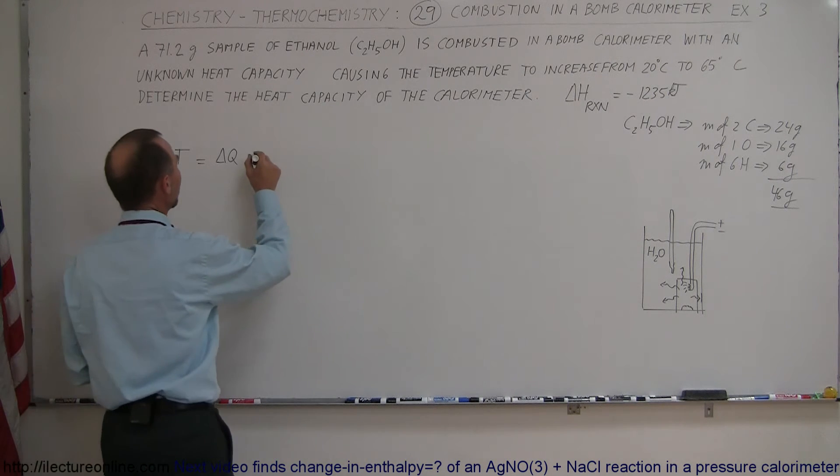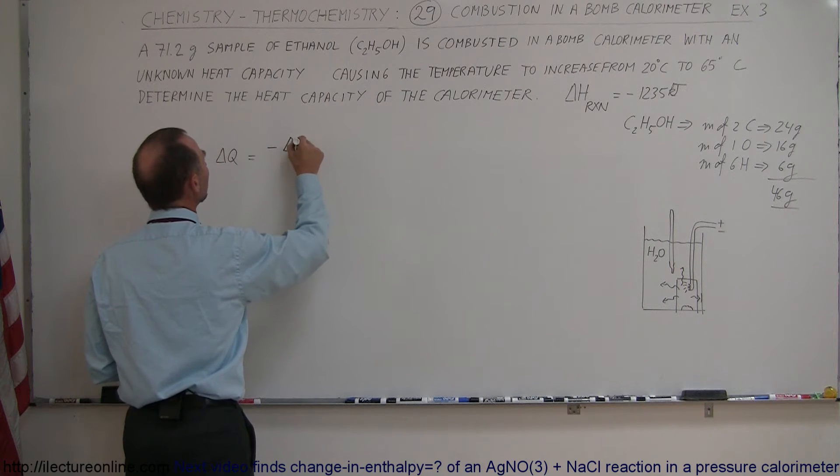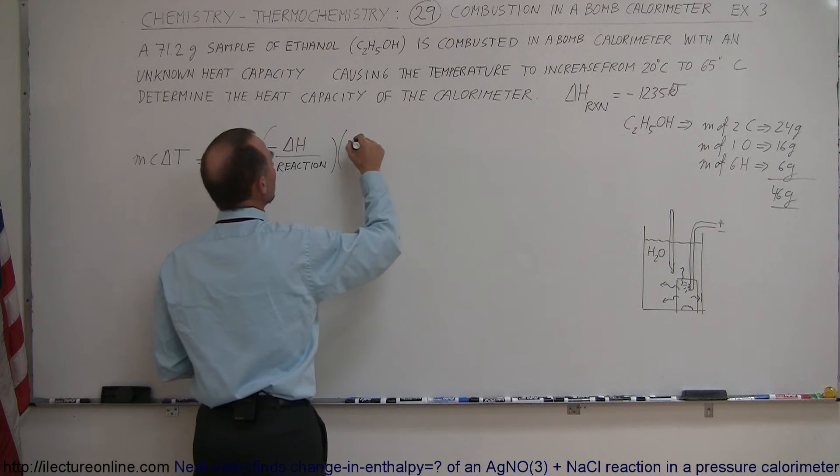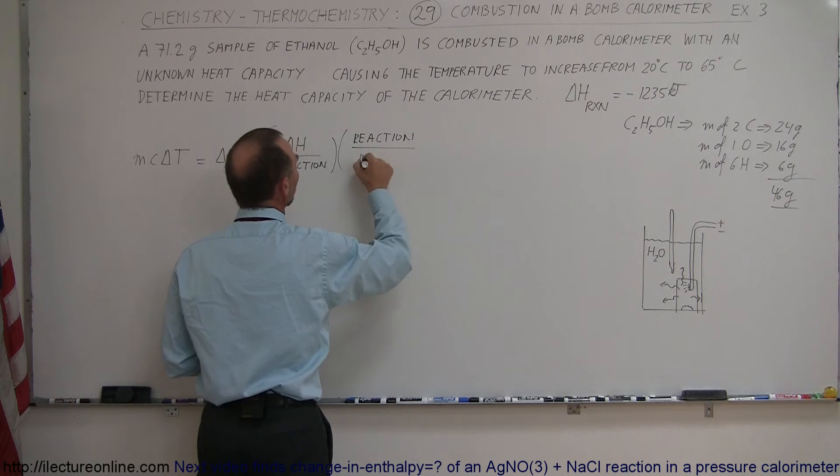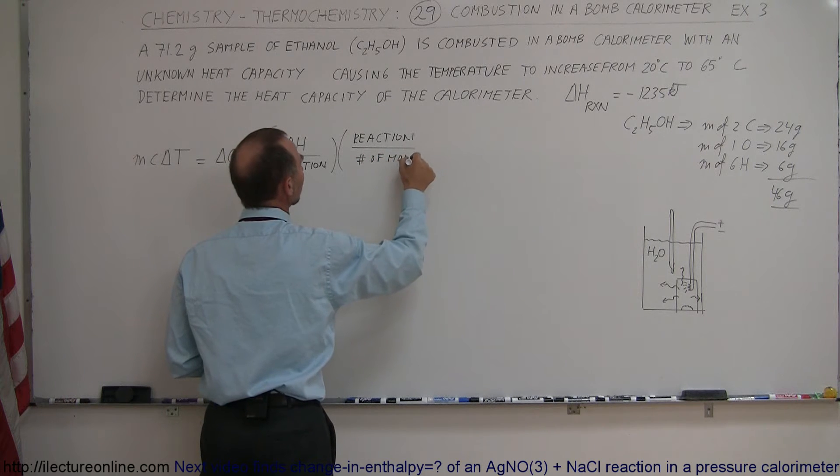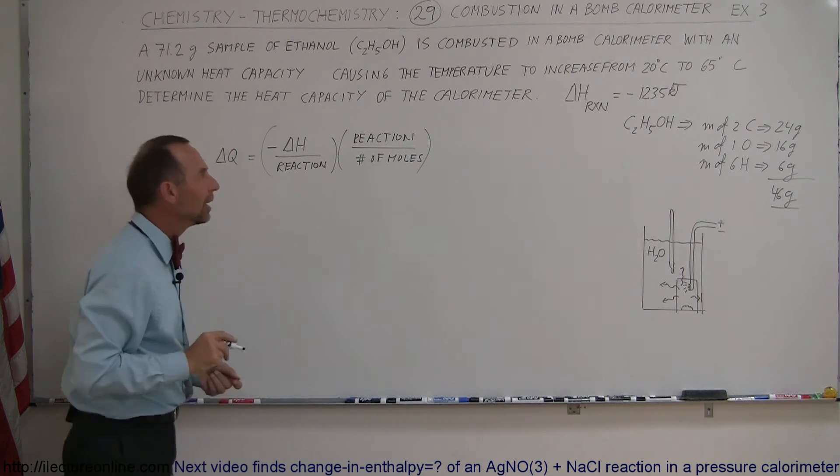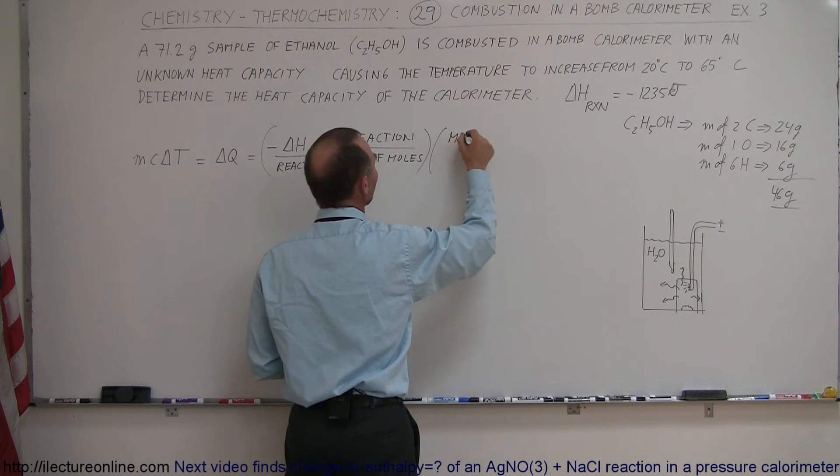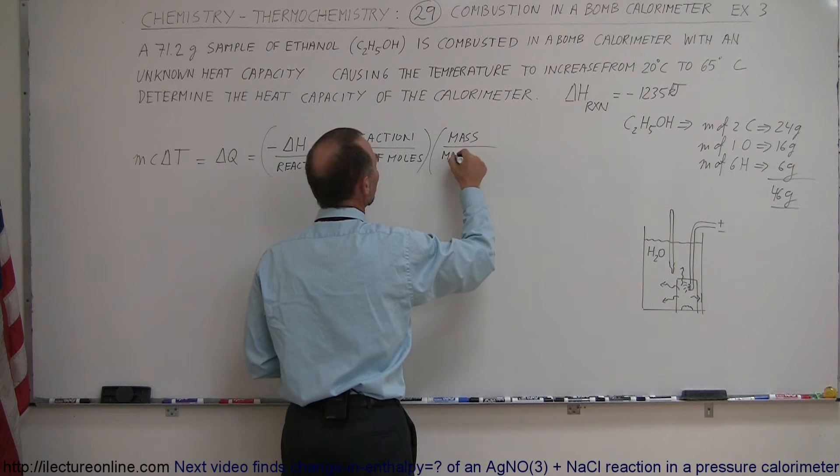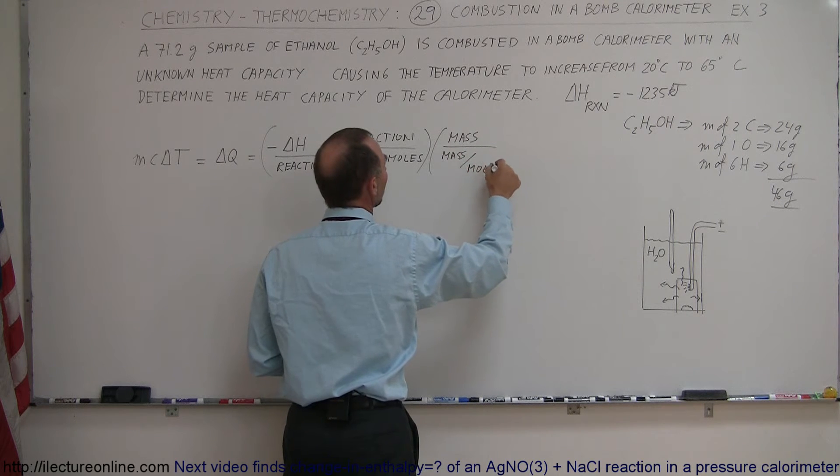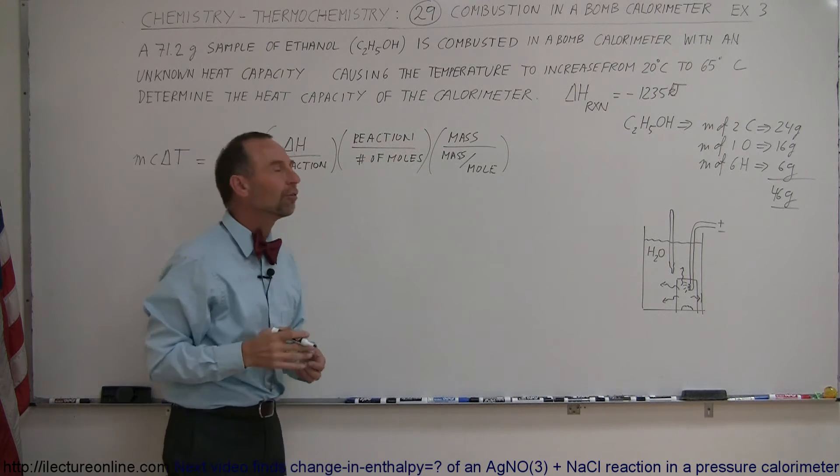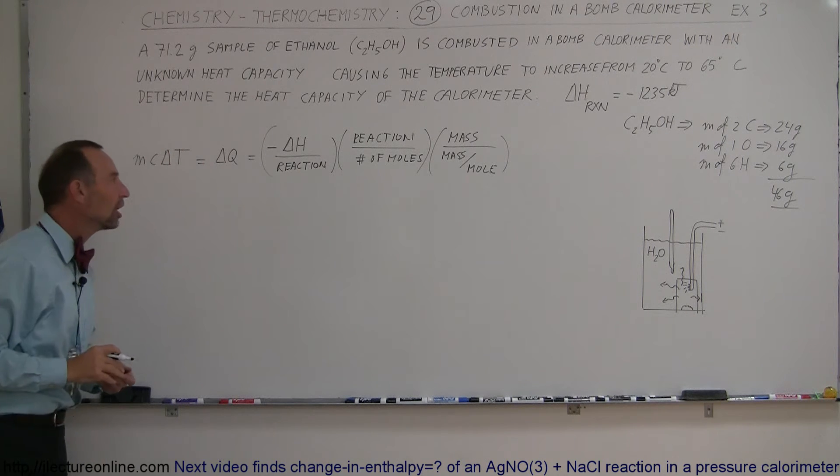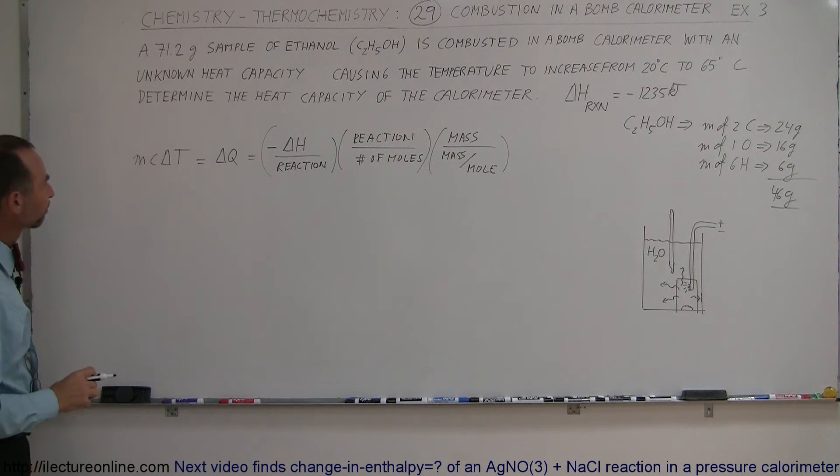And how do we calculate the heat given off by the reaction? This is equal to the negative of the enthalpy change in the reaction, that would be per reaction, multiplied times the reaction divided by the number of moles in the reaction. Because what we're doing here is, if there's more than one mole of the ethanol in there, we need to take that into account. And then finally we multiply it times the mass of the sample divided by the molar mass. So this basically tells us what fraction of a mole that we have in our sample, in order to very carefully calculate the change in the temperature and the heat that was given off.